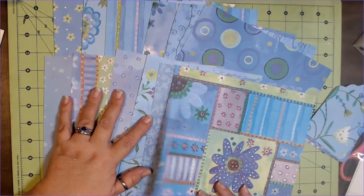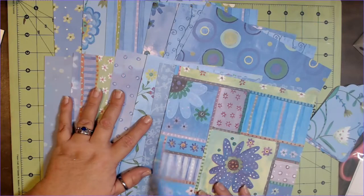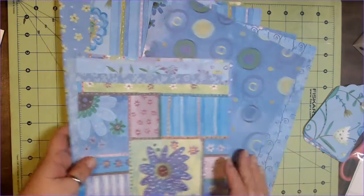So we're getting 12 sheets of 8 and a half by 11 paper. This is thick cardstock, thick scrapbooking paper. So we're going to get that. So we get paper.